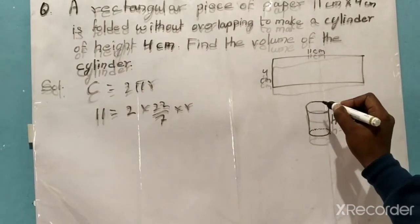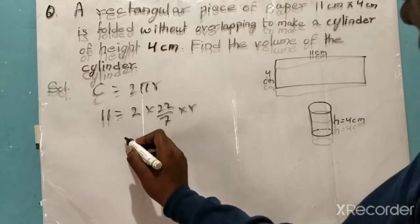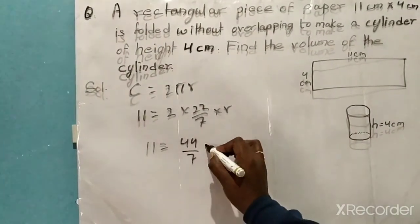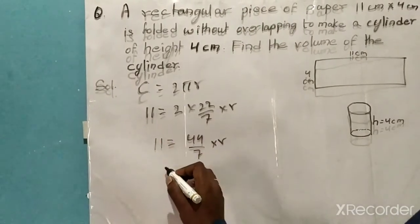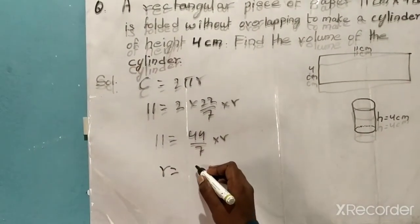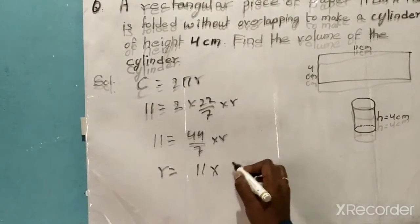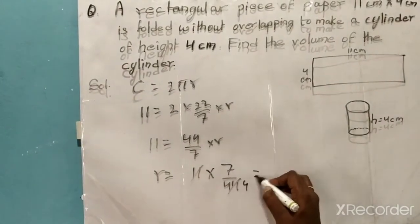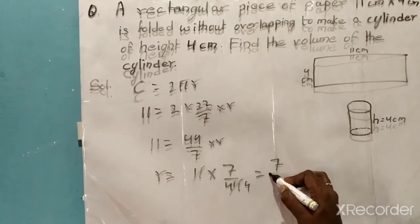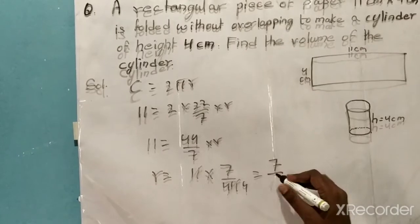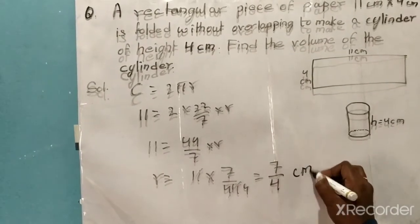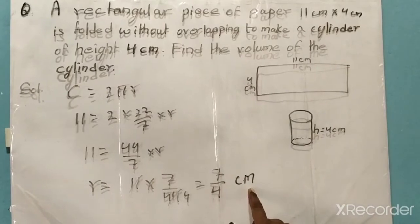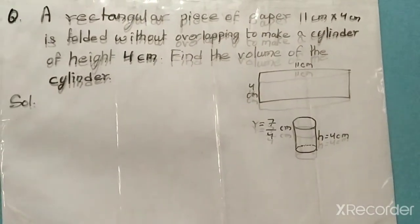We have to find r, the radius of the circular base. Solving: 11 equals 44/7 into r, bringing 44/7 to the other side gives r equals 11 into 7/44, which simplifies to 7/4. So the radius r is 7/4 centimeter.